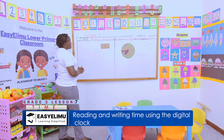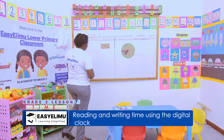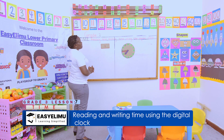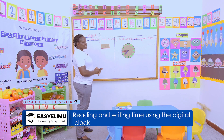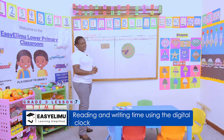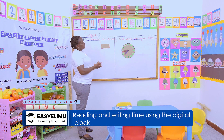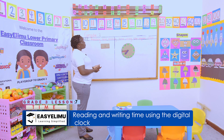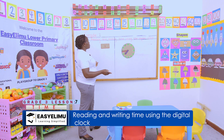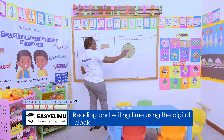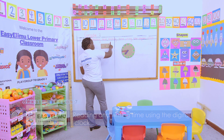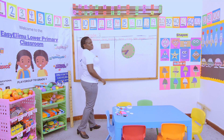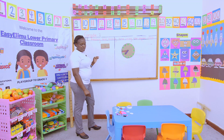Reading and writing time using the digital clock. You can see there are two clock faces on our board. We said the one on the right side is the analog one, and we are moving from analog going to digital.